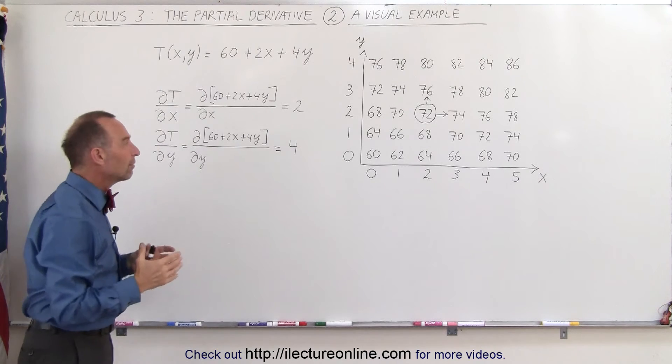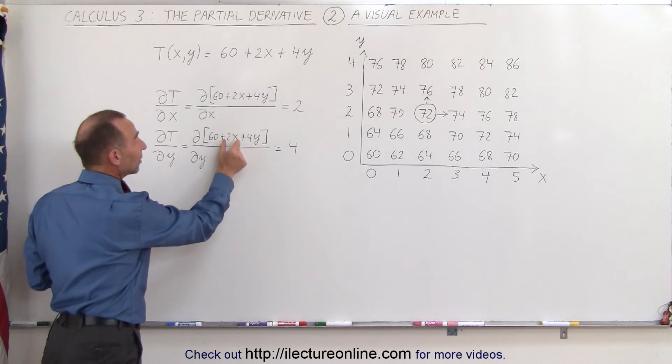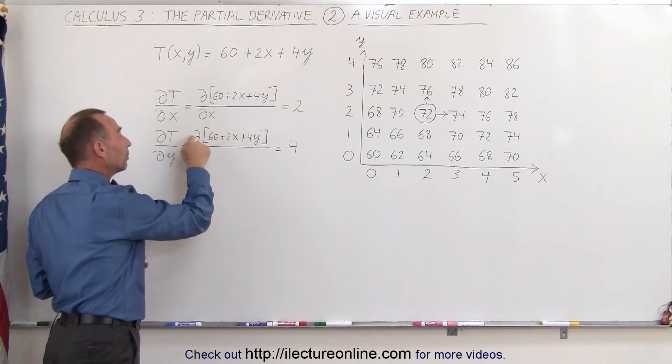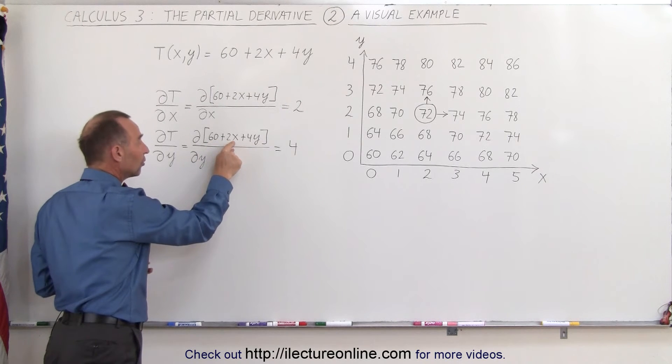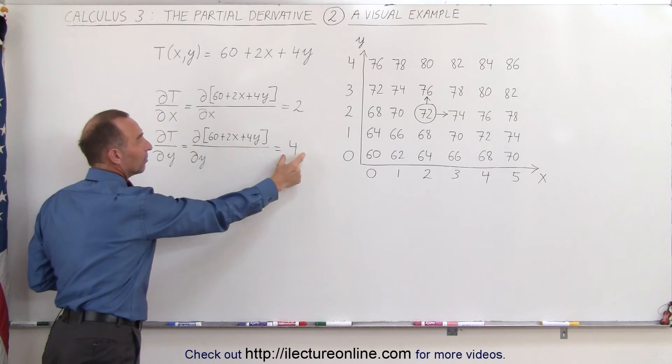Now let's take the partial derivative of that same function with respect to y. Now we're going to keep x constant, so this becomes a constant, 60 is a constant. When we take the partial derivative with respect to y, this goes to 0, this goes to 0, and the partial derivative with respect to y of 4y is simply 4.